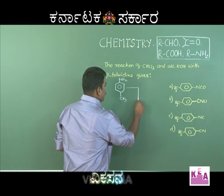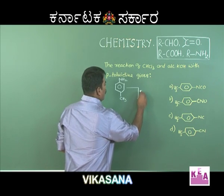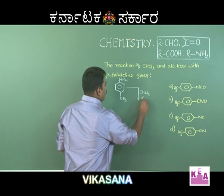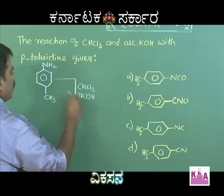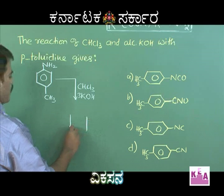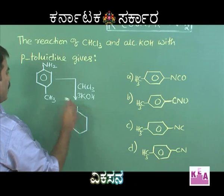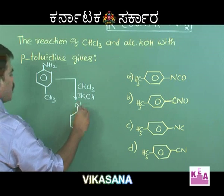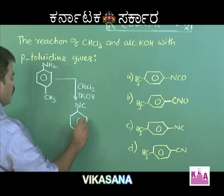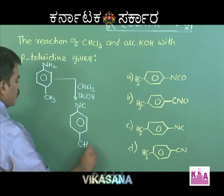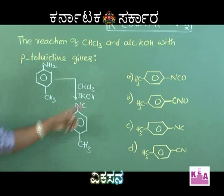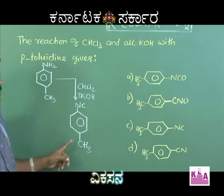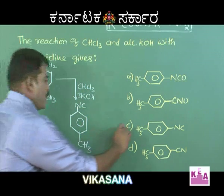Upon treating paratolidine with CHCl₃ and KOH, you must get an isocyanide or carbylamine. Since it is a primary amine, the NH₂ group will convert into an isocyanide group; the rest of the molecule remains the same. Option A and option B are incorrect, so option C should be correct.